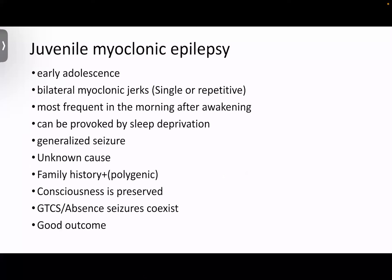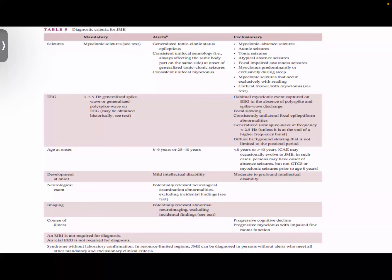Juvenile myoclonic epilepsy has onset usually in early adolescence. There are bilateral myoclonic jerks that can be a single event or repetitive, most frequent in the morning after awakening, and can be provoked by sleep deprivation. It is a generalized seizure of usually unknown cause. There is often a family history; it is polygenic, and consciousness is usually preserved. GTCs or absence seizures can coexist, but it usually has a good outcome. Diagnostic criteria include 3.3–5.5 Hz generalized spike-wave or poly-spike-wave on EEG. MRI and ictal EEG are not required for diagnosis.